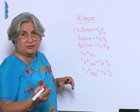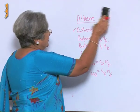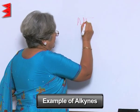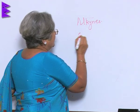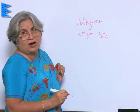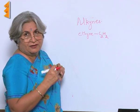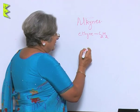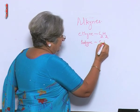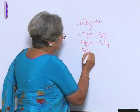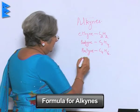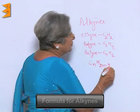The third kind of compounds are those in which there is a triple bond — we have alkynes, like ethyne, which is C2H2. It is also called acetylene, which is used for welding — the oxyacetylene flame. Then there is propyne, and then there is butyne. So what will be the general formula? CnH2n-2.